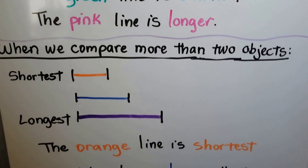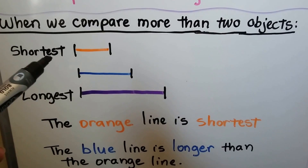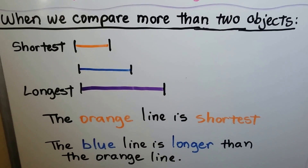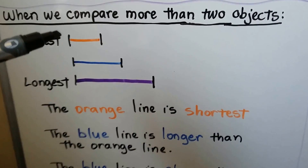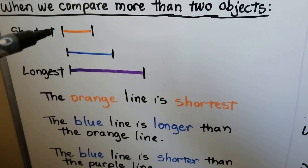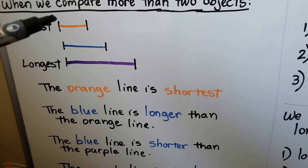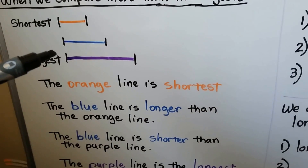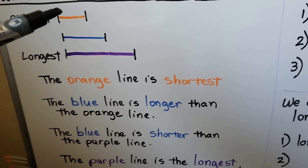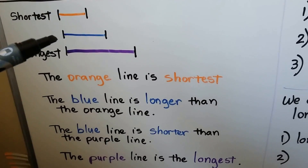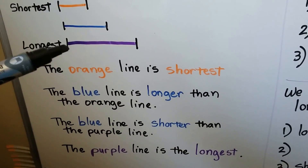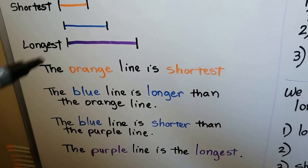When we compare more than two objects, we can put an EST at the end of the word short and long. Here we have three lines: an orange line, a blue line, and a purple line. The orange line is the shortest. The blue line is longer than the orange line, and shorter than the purple line. The purple line is the longest.